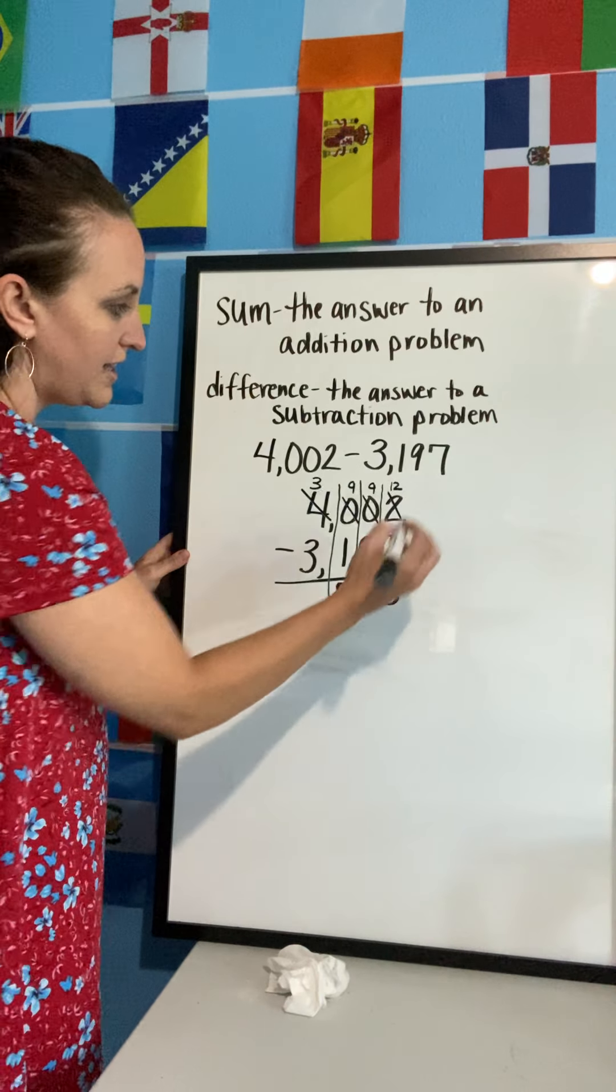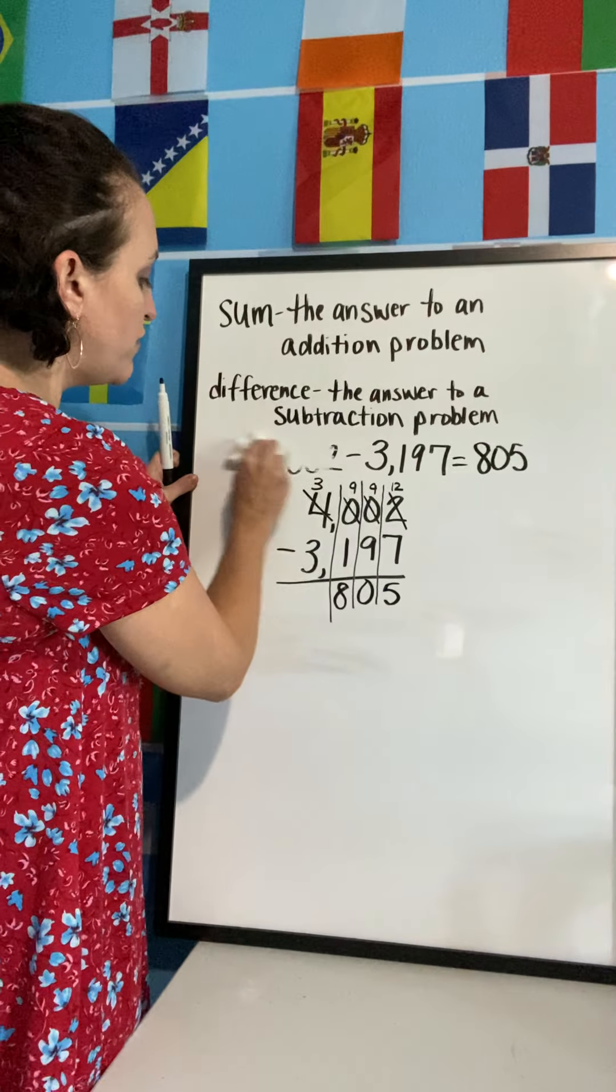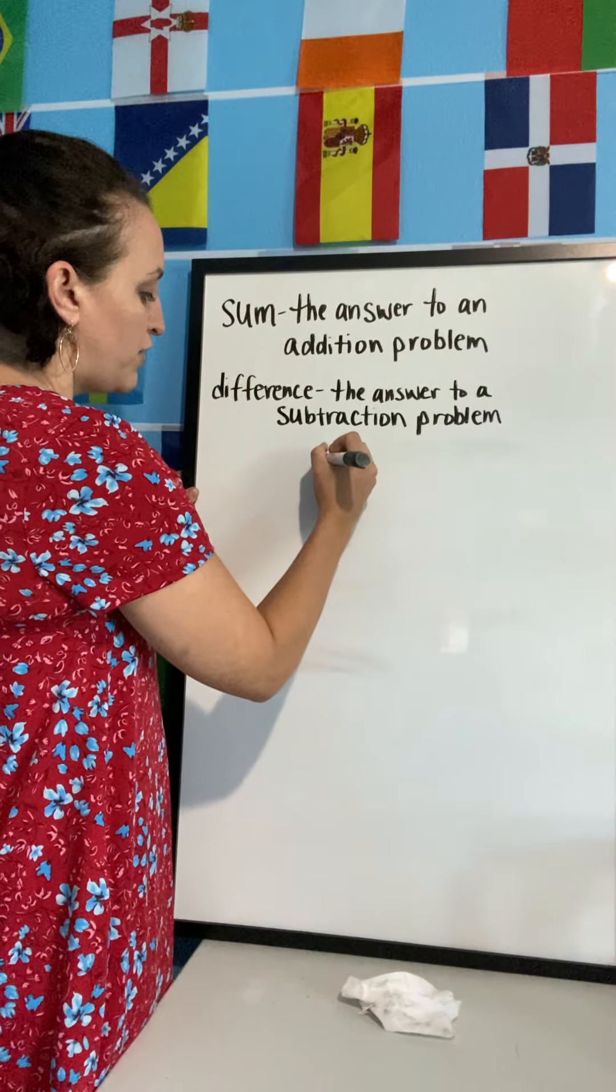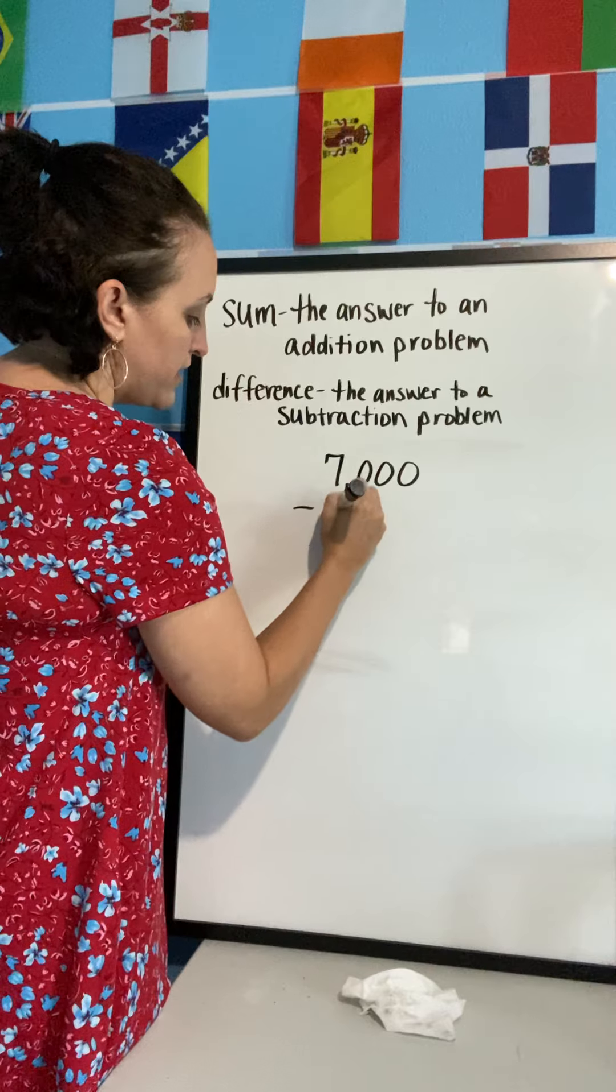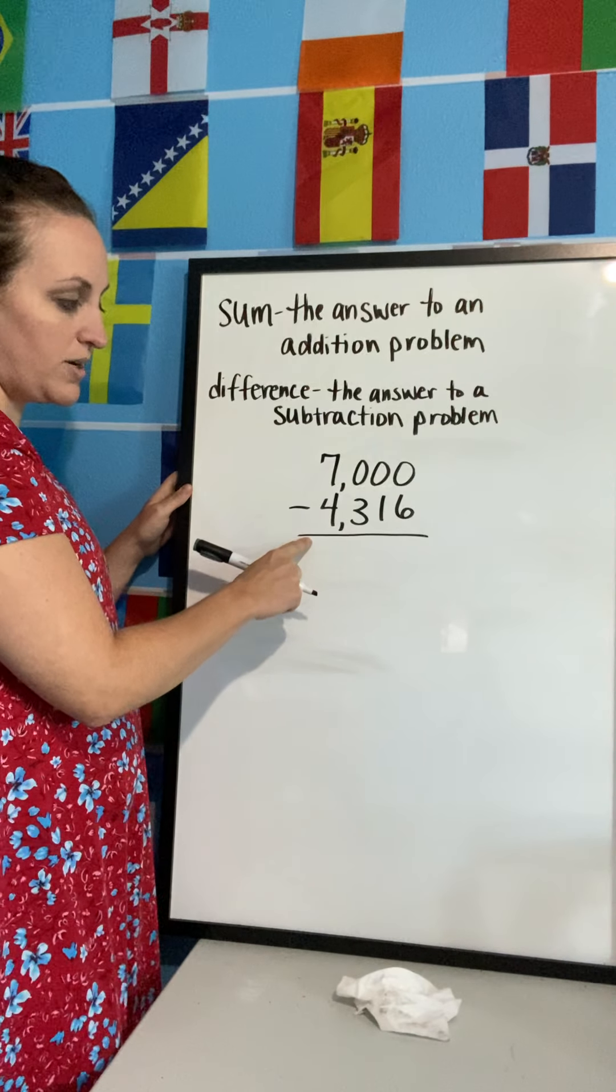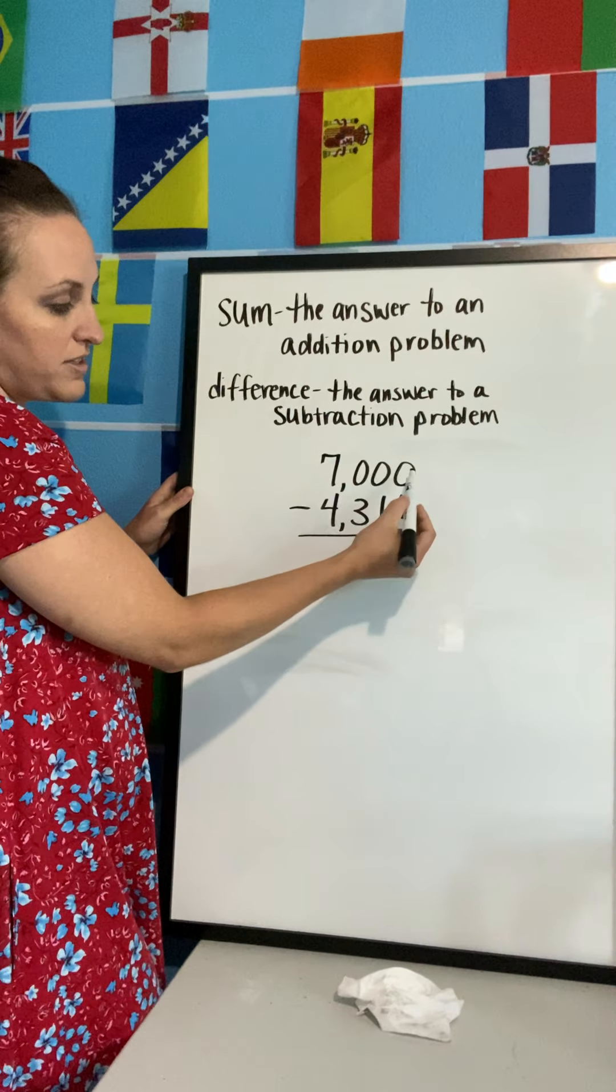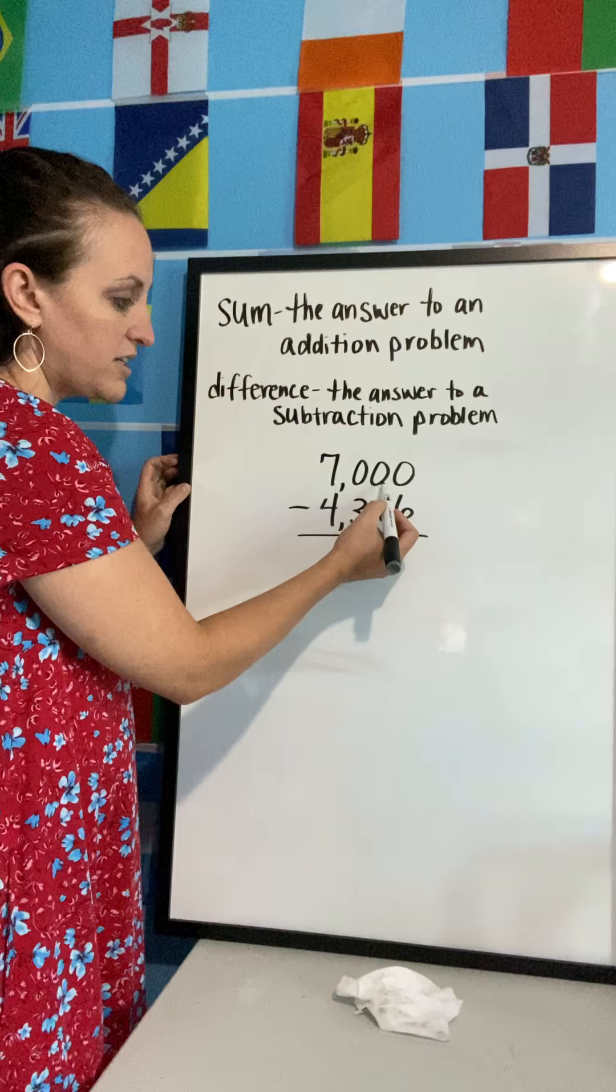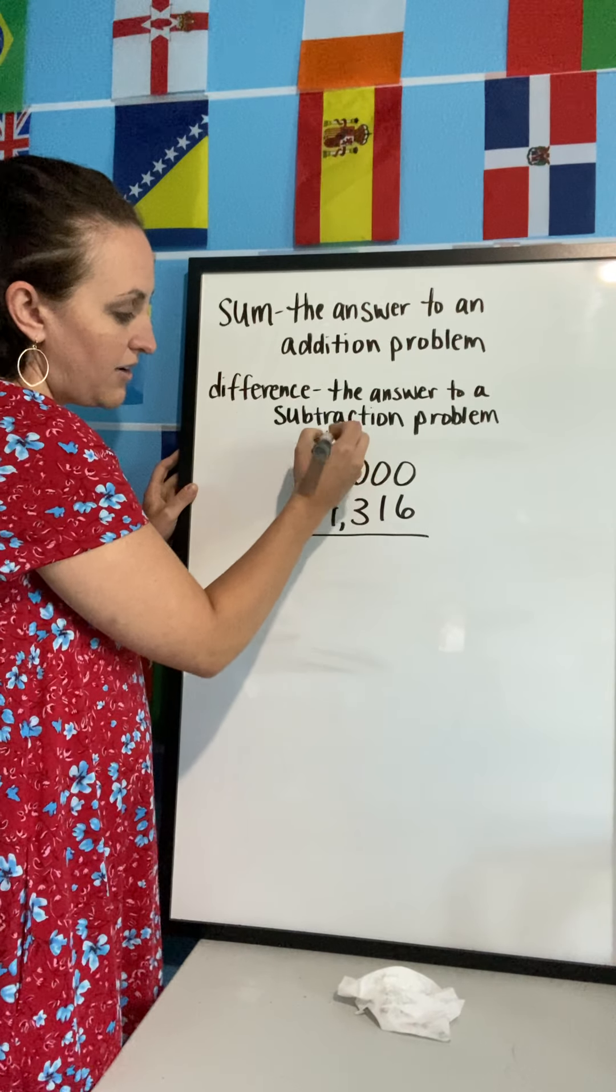Let's look at one more example of a problem and it's going to have zeros too. Let's say I have seven thousand minus four thousand three hundred sixteen. Again, I have all zeros up here, so I'm going to have to do some regrouping. I have zero minus six. If I have nothing, I can't take six away because I have nothing to begin with, so I have to go next door. But here still a zero, still a zero. I've got to go all the way to the seven. The seven goes down to a six.